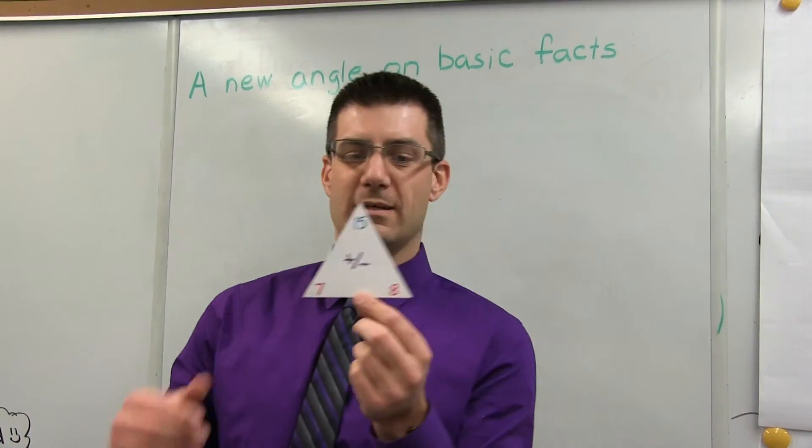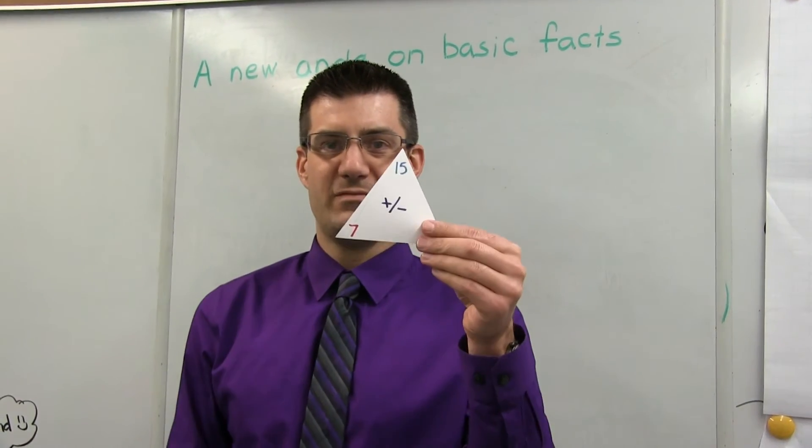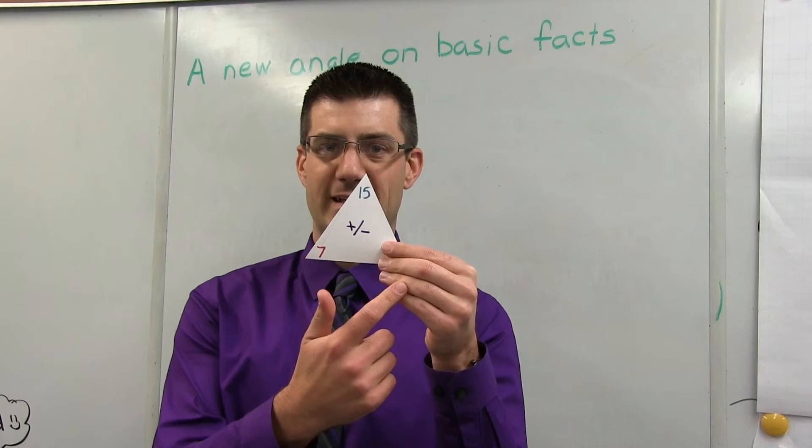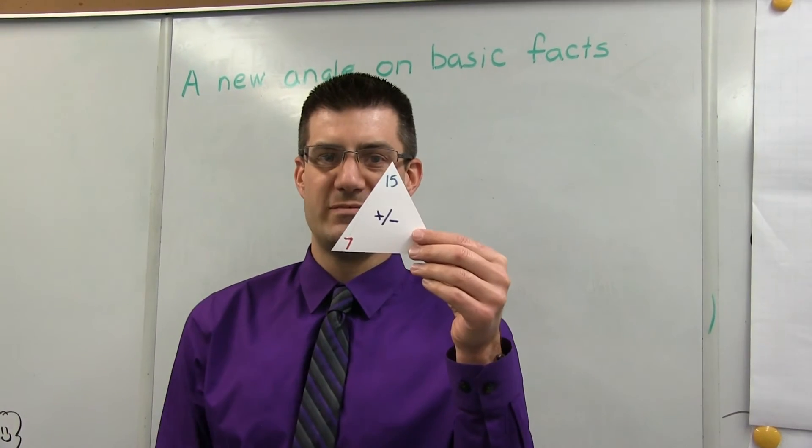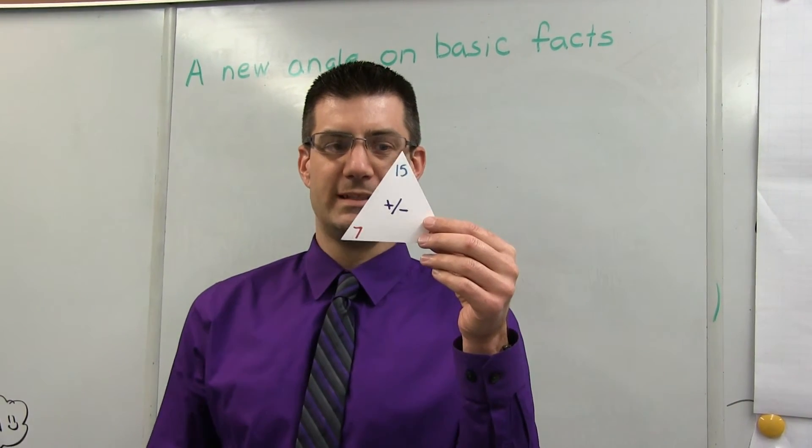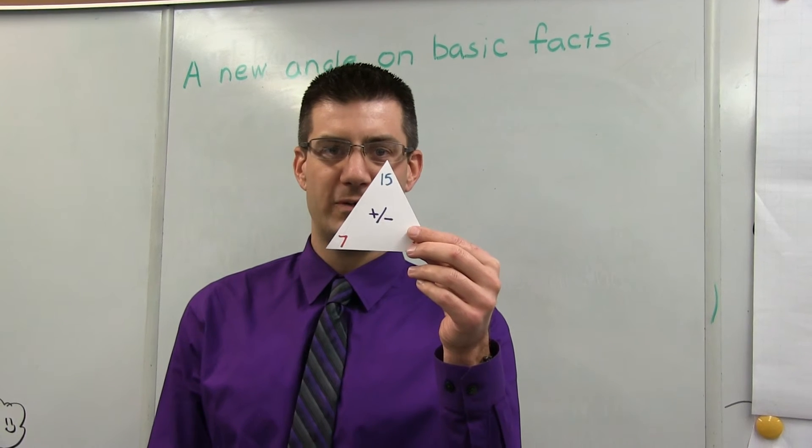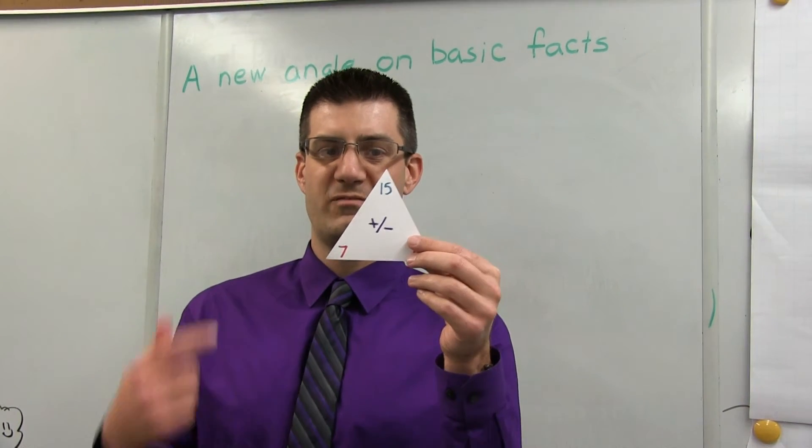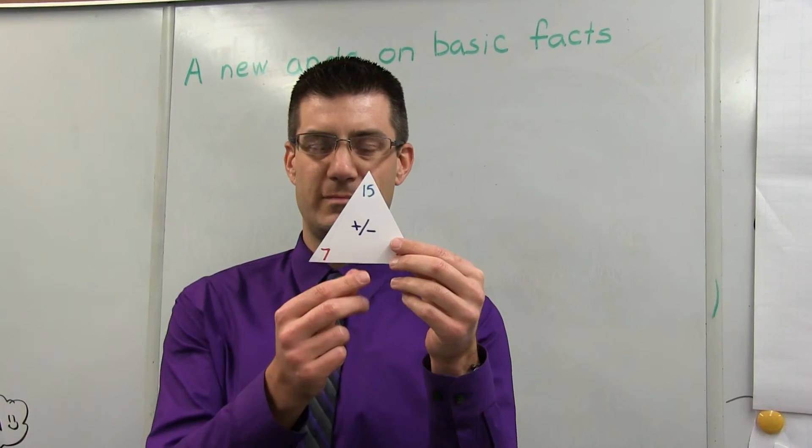Say I covered up the 8. If I knew 7 plus something gives me a total of 15, I could either use a counting up strategy, or I could relate it to subtraction and think 15 minus 7 would give me 8.